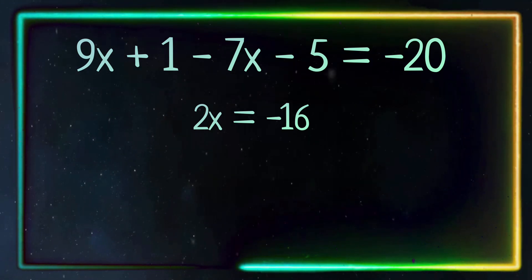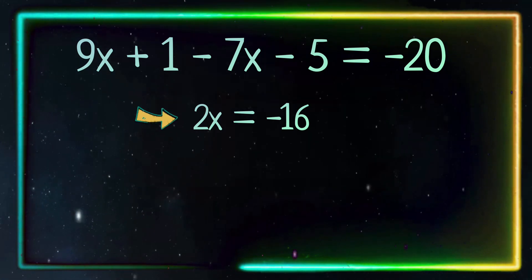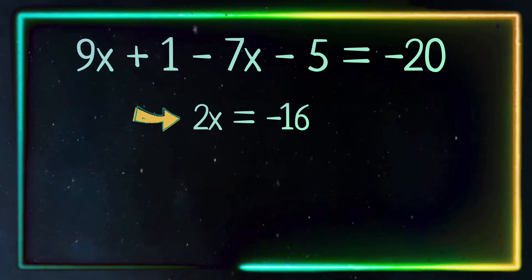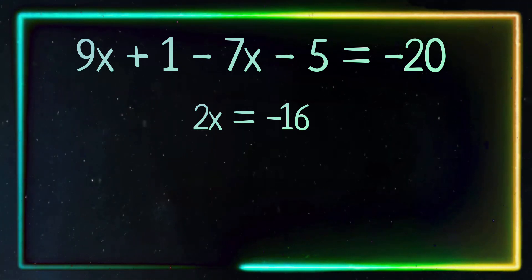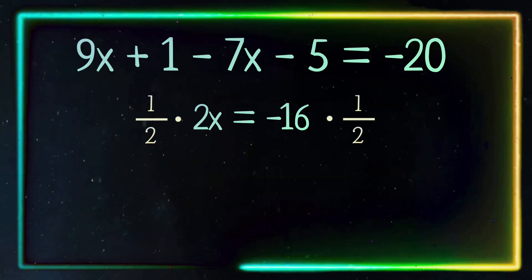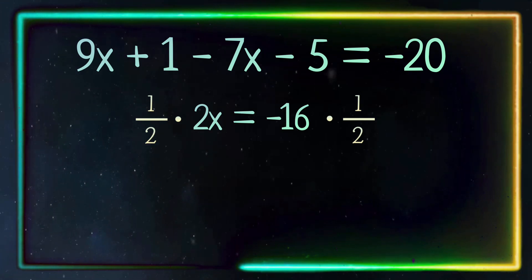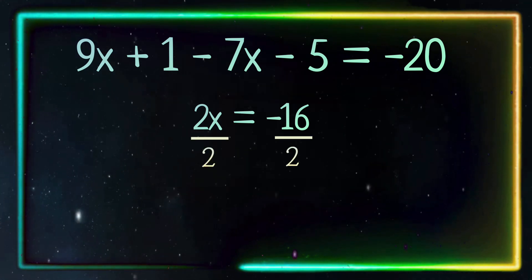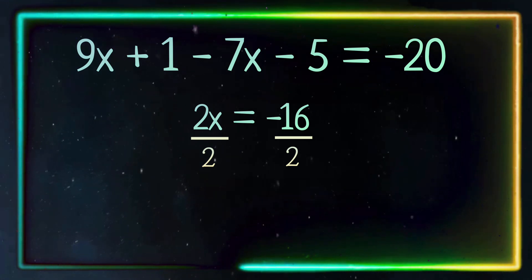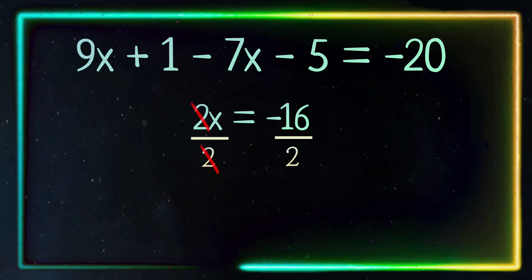What's left for us to do now is to cancel out the 2 in order to get x by itself, so we're going to divide both sides by 2. And depending on how you want to do it, you can either do it this way or you can do it this way. It's up to you, but you're going to get the same answer either way. Now that we've canceled it out on this side, we're going to cancel it out on the other side.